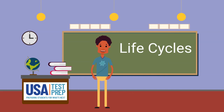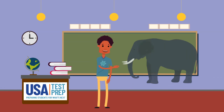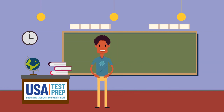Let's wrap things up. I had so much fun talking about life cycles and frogs and butterflies. Remember, some animals are born and look like smaller versions of their parents. Some animals go through many stages before they are adult animals.